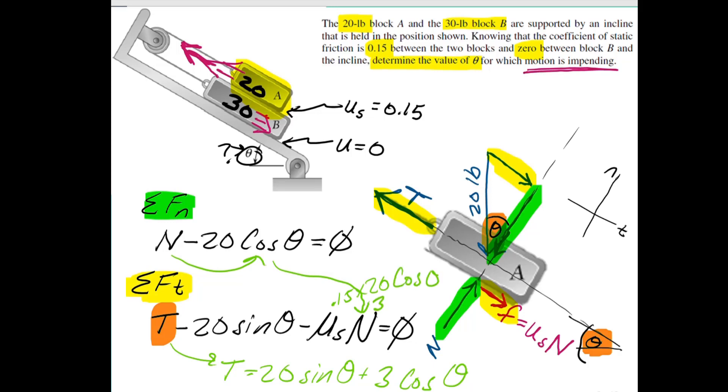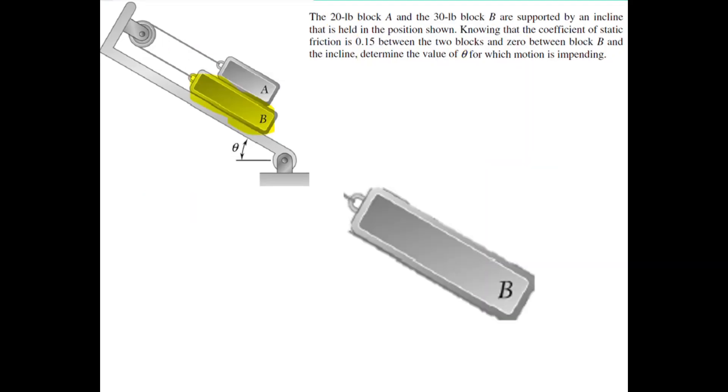Okay, so a couple different substitutions in here, but you're just adding forces in x and y or tangent normal direction. Next up, we're going to do the same thing for block B. So we're isolating block B and looking at the forces acting on the second block.